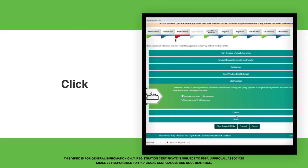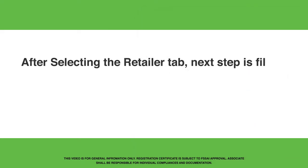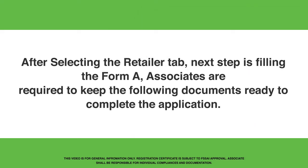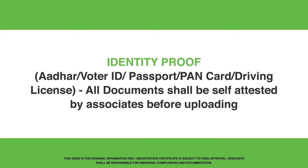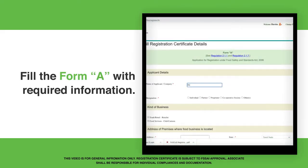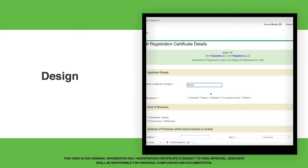Click Proceed. After selecting the Retailer tab, the next step is filling the form. Associates are required to keep the following documents ready to complete the application: Associate's Photograph, Identity Proof, Aadhaar, Voter ID, Passport, PAN Card, and Driving License. All documents shall be self-attested by Associates before uploading.